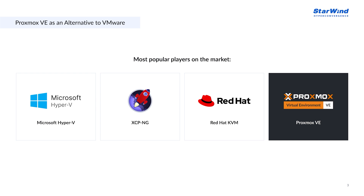Businesses are exploring alternatives to VMware such as Microsoft Hyper-V, KVM, and Xen/PVE-based hypervisors. We've hosted some webinars on this topic recently — if you're interested to see how the different hypervisors compare to each other and how Starwind works on various hypervisors, check out our official YouTube channel or website. There is also one more popular alternative: the Proxmox virtual environment, which has started a lot of discussions and considerations lately.